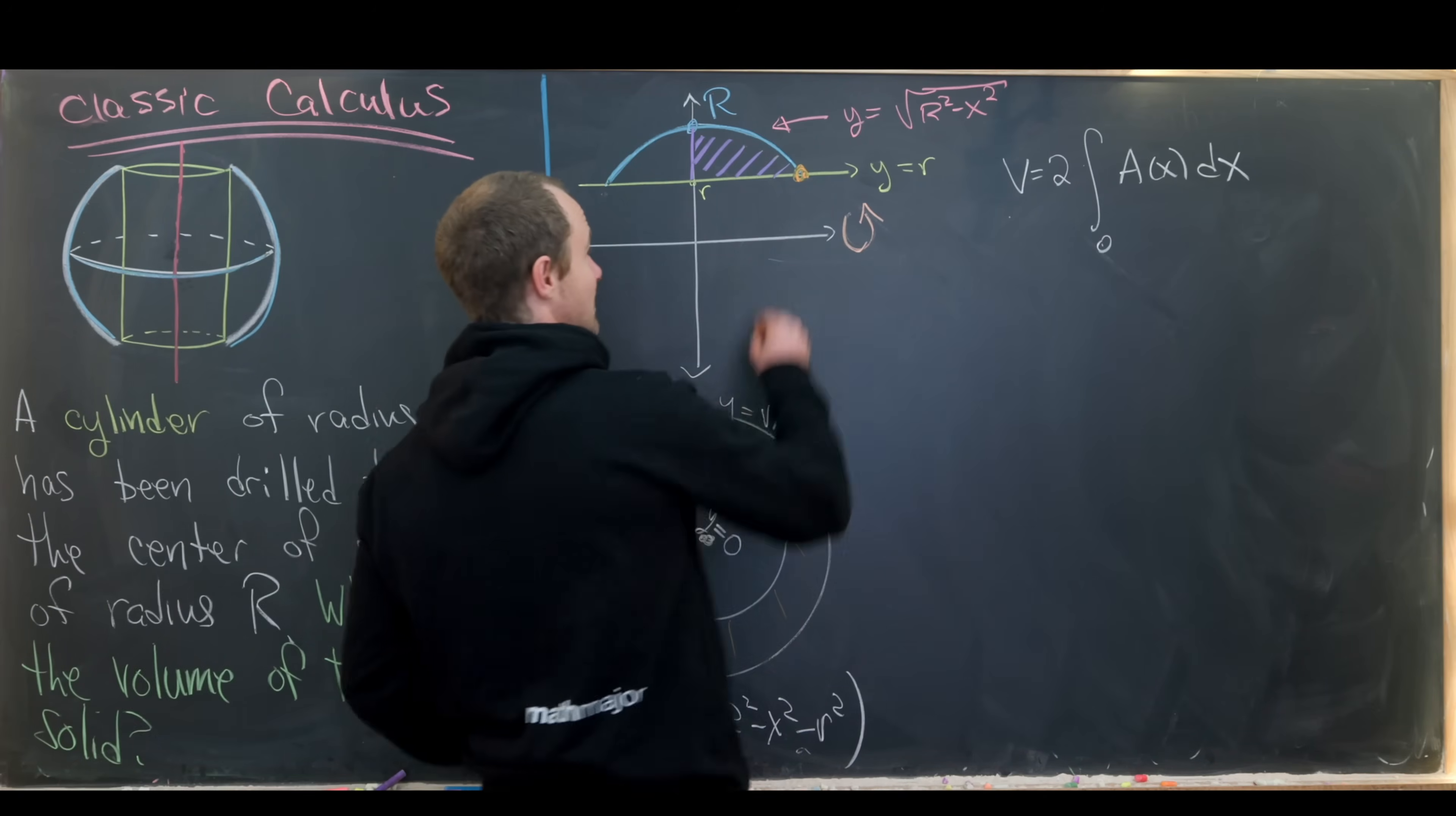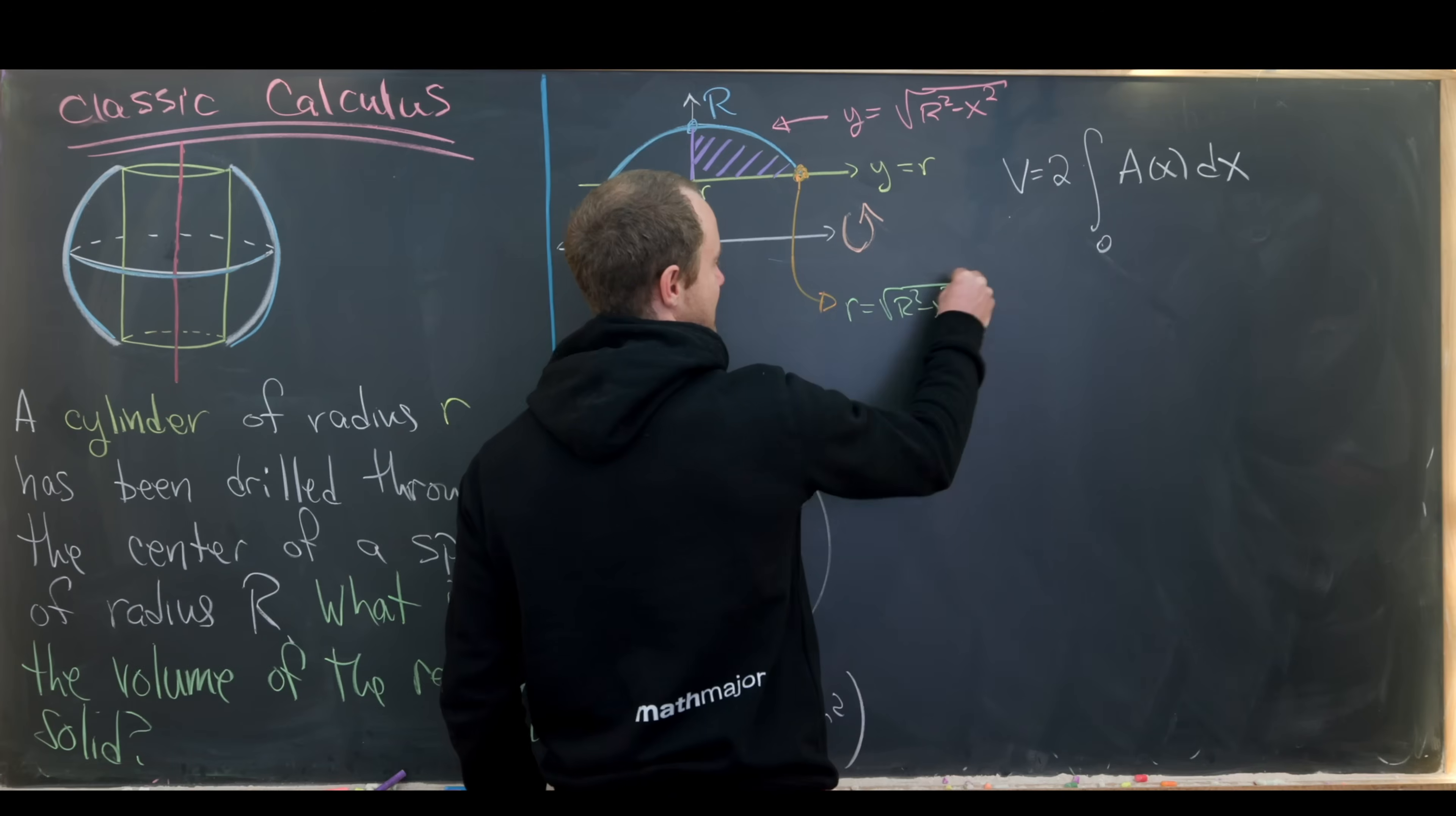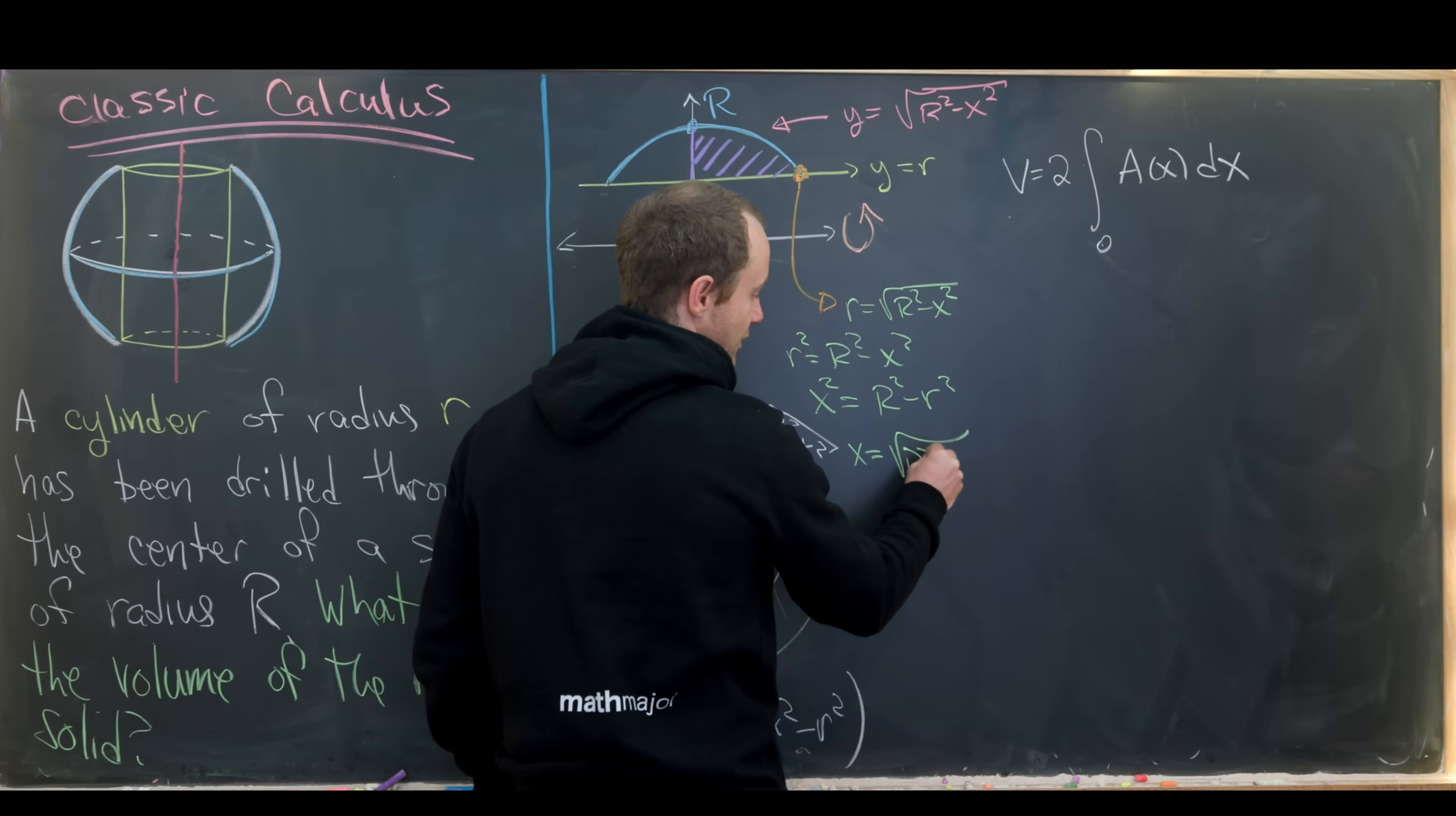Okay. So now let's go ahead and calculate this point right here, which shouldn't be too bad. So we need to set these curves equal to each other. So we've got little r is equal to the square root of capital R squared minus x squared. So squaring both sides, we have lowercase r squared is capital R squared minus x squared. Then moving some things around, we see that x squared is capital R squared minus little r squared.